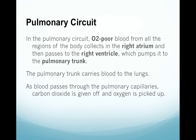In the pulmonary circuit, oxygen-poor blood from the regions of the body collects in the right atrium and then passes to the right ventricle, which pumps it to the pulmonary trunk. The pulmonary trunk carries the blood to the lungs. As the blood passes through the pulmonary capillaries, carbon dioxide diffuses out and oxygen diffuses in.